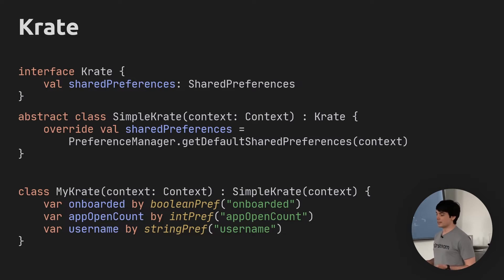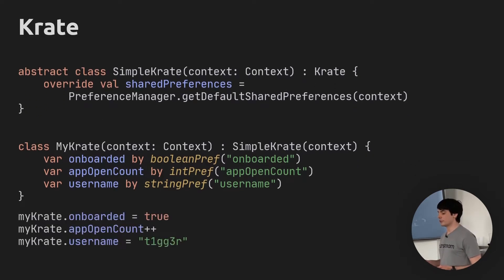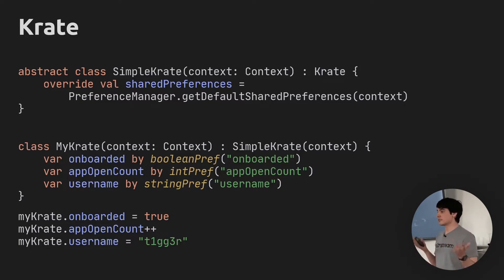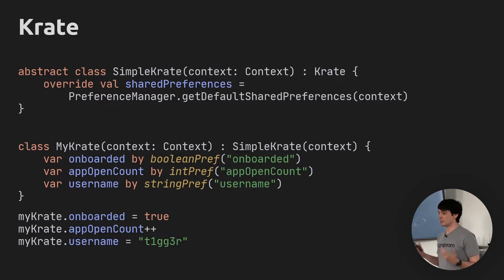The magic here is that all of this is done with Kotlin's property delegation syntax. Whenever you create an instance of your crate and then read and write values from and to it, you could do it just as if these were regular booleans, ints, or strings in memory — but under the hood, these would all get persisted into shared preferences and survive application restart.